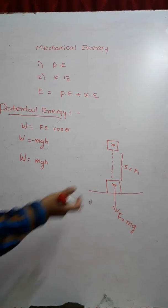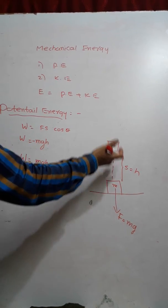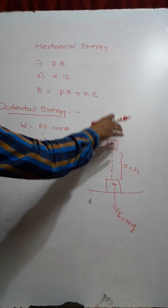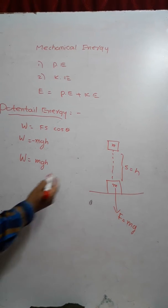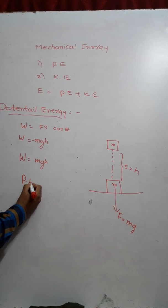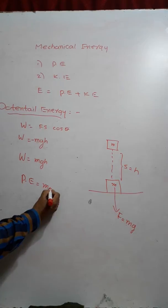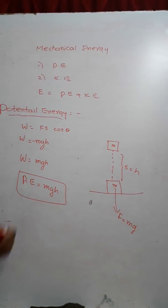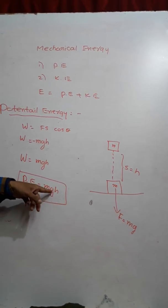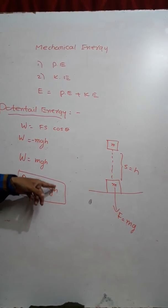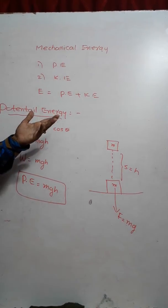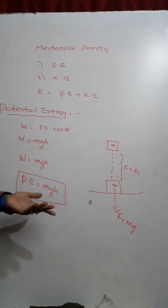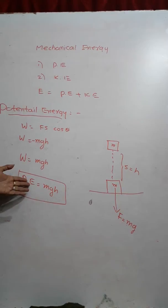So the work done in lifting the body to a height h above the ground level is stored in that body in the form of potential energy. So, potential energy P is equal to mgh. This is the formula, where m is the mass of the body, g is acceleration due to gravity, and h is height above the ground level. If the body is on the surface of the ground, since h is equal to 0, its potential energy is 0.